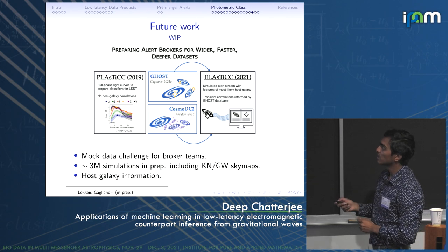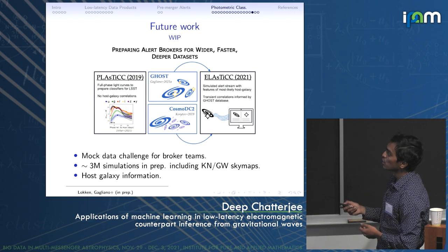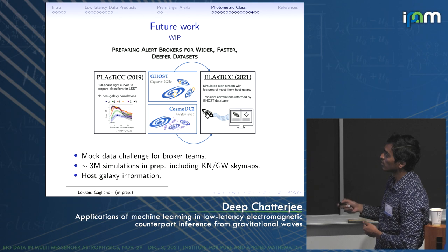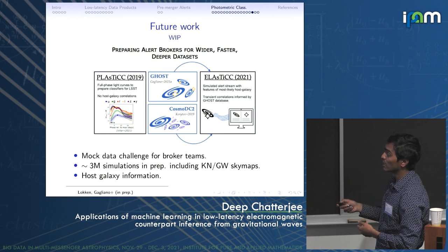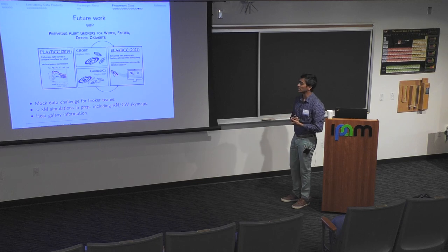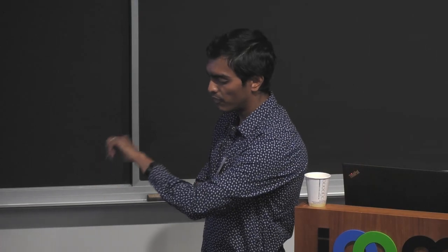Regarding future work, there is a project called Elastic, ongoing in Illinois and overall in the LSST DESC. The plan is to simulate mock alert streams including gravitational waves and kilonovae with host galaxy information, and send these out to broker teams so they can test their facilities and be ready for the Rubin Observatory. I finished a few minutes early, so I'll leave my conclusion slides up and take any questions.